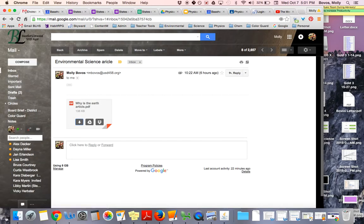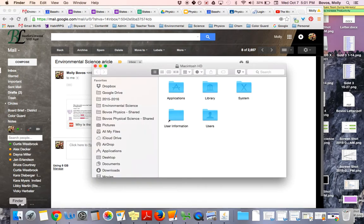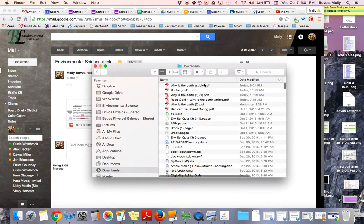So how we do that is we need to open this document in a program called Preview. So you're going to go to your Finder, and then in Finder, go to your Downloads, and then you should have that article as the most recent thing that's in there. You may have to get your date modified updated, and then whatever the most recent thing is that you downloaded will be at the top.